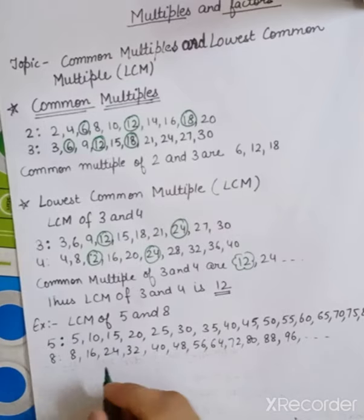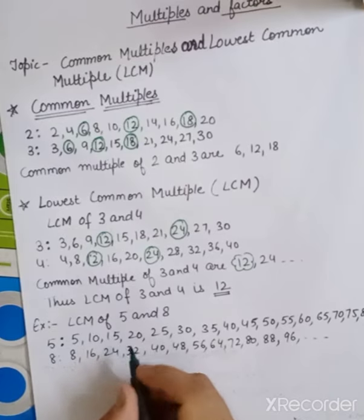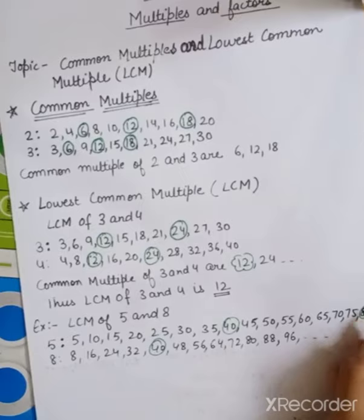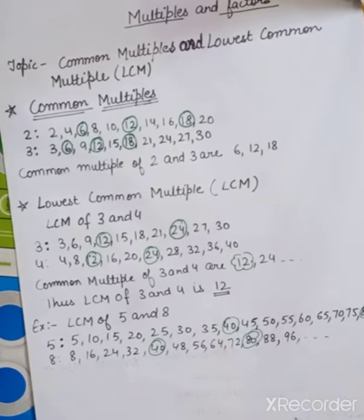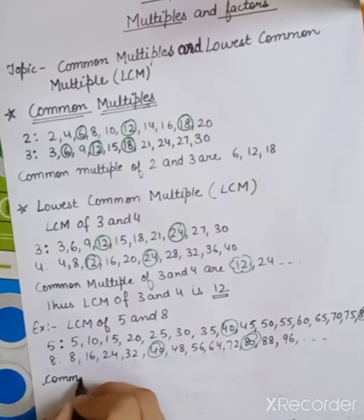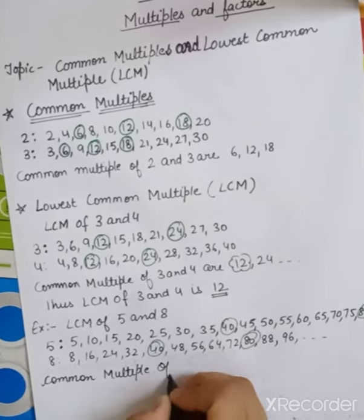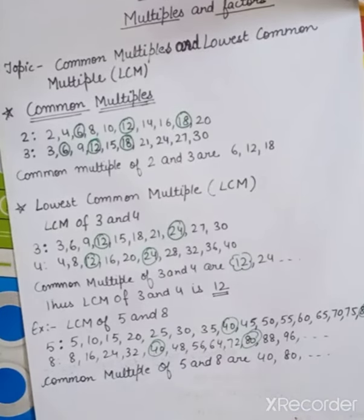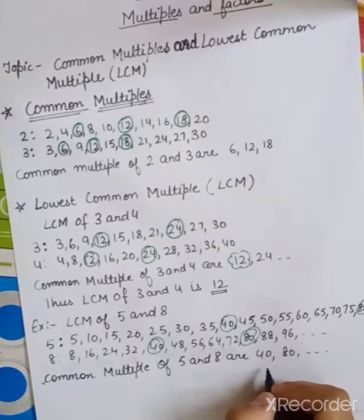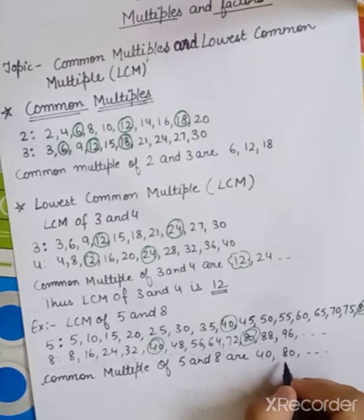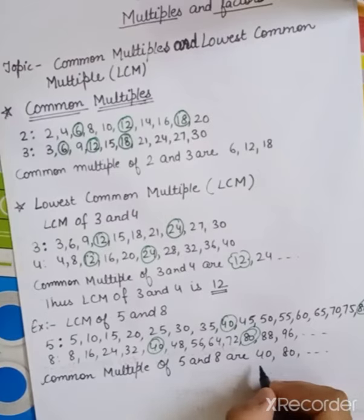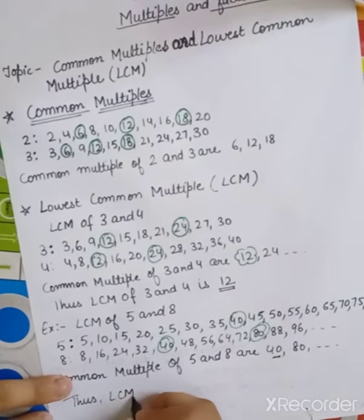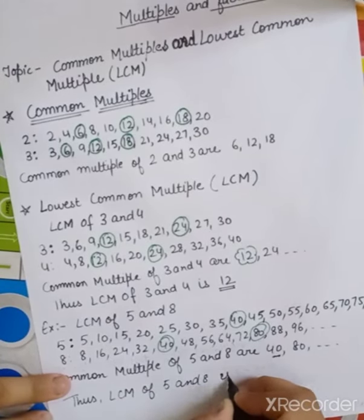Now we find the common multiples out of these. Going through the multiples of 5: 5, 10, 15, 20, 25, 30 are not common, but 40 is a common multiple because it is present in both tables. The next common multiple is 80. So the common multiples of 5 and 8 are 40, 80, and so on. Out of these, 40 is the smallest, so the LCM of 5 and 8 is 40.